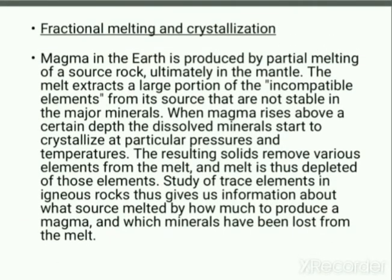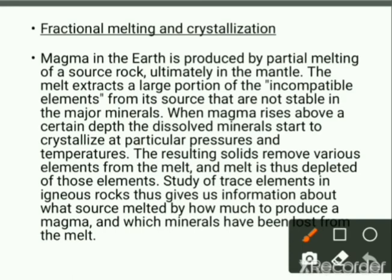Fractional melting and crystallization: magma in the Earth is produced by partial melting of source rock, ultimately in the mantle. The melt extracts a large portion of incompatible elements from its source that are not stable in major minerals. When magma rises above a certain depth, the dissolved minerals start to crystallize at a particular pressure and temperature. The resulting solids remove various elements from the melt, depleting it of those elements. Study of trace elements in igneous rocks gives information about the source, how much melting occurred, and which minerals were lost from the melt.